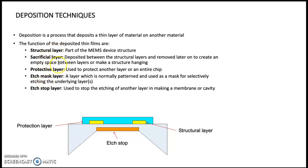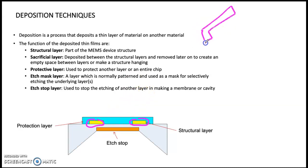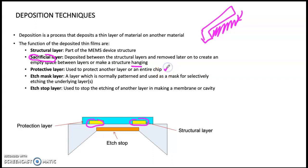What are the differences between structural, sacrificial, etch-mask, etch-stop, and protective layers? The structural layer is where you make your device — the yellow layer shown here is the structural layer, it is part of the device. Sacrificial means we deposit it temporarily and remove it later to make the device hanging. For example, to make a cantilever, you first add a sacrificial layer below, deposit the cantilever beam on top, then remove the sacrificial layer so the cantilever hangs freely.